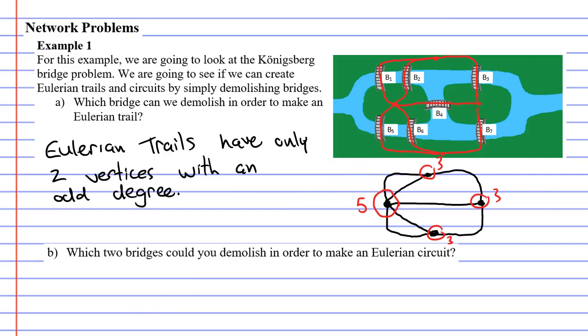To demolish a bridge is the same as demolishing an edge on our network diagram. Let's try demolishing any edge. This edge would represent bridge 2. When you do that, you'll notice that the degree of two of the vertices will change. This one will now change to 4 and this one will change to 2, which is perfect. Now we only have two vertices with an odd degree.